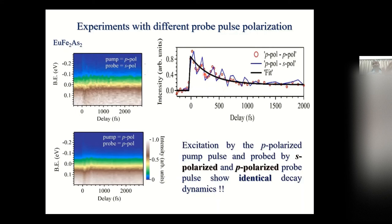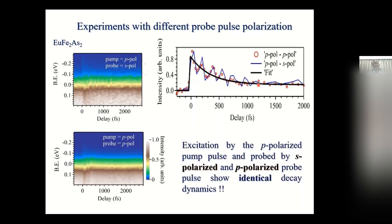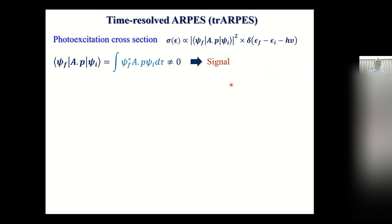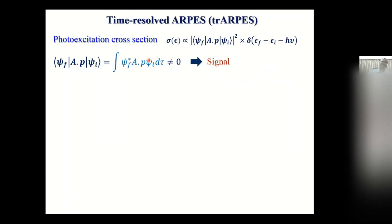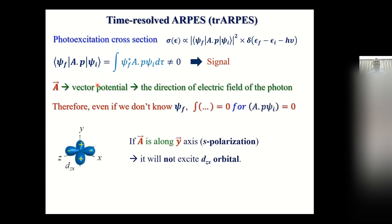Looking at the signal decay: if you look at the relaxation rate by which the signal decays, for both polarizations you appear to see the same kind of decay. This raises the question: are the electrons behaving similarly, or is the technique not good enough to detect them? We tried to propose a different kind of method. Looking at the matrix element integral ⟨ψ_f | A·p | ψ_i⟩: if ψ_i is zero, you cannot get intensity. This is effectively used for dichroism-type measurements. Basically, if the A-vector is aligned along one of the orbital lobes, you get excitation; if not aligned, you don't get excitation. That's the basic idea — S-polarization doesn't give d_xz signal, and P-polarization where A lies in the emission plane gives strong d_xz intensity.